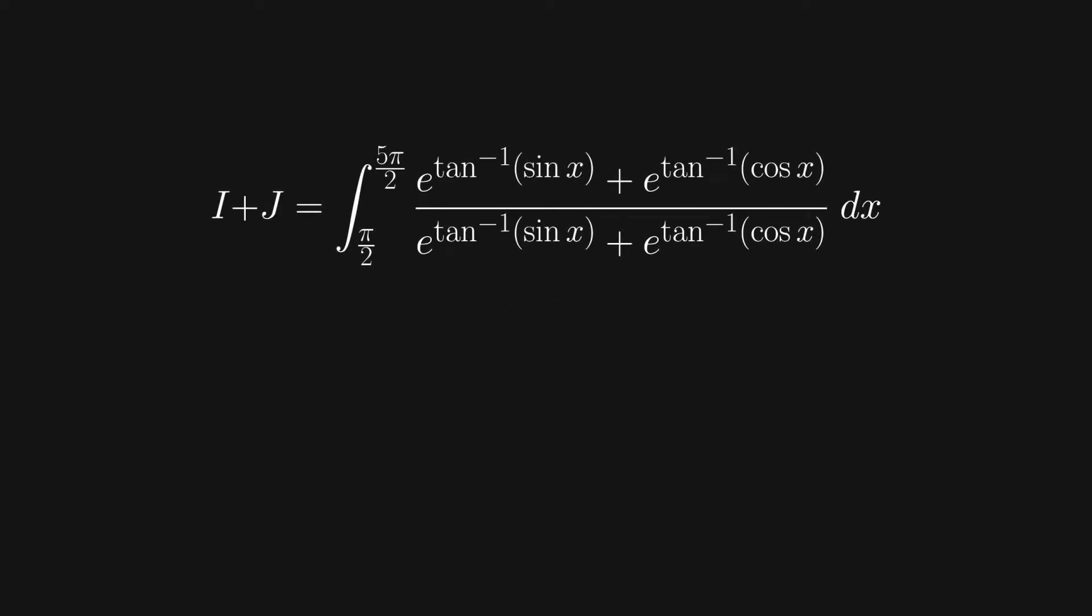The reason we've introduced another integral is so that we can find some relationships between them. Notice that if we add the two integrals together, the numerator and denominator cancel each other out. This leaves us with the integral of 1, from π/2 to 5π/2. This works out to be equal to 2π. Now we know that I + J equals 2π.